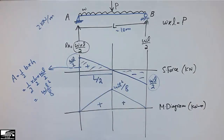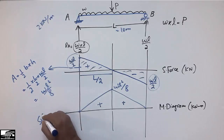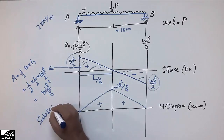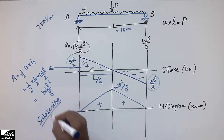The maximum moment always occurs at the midpoint of a simply supported beam with a uniformly distributed load. Hope you guys understand — don't forget to subscribe to the channel for more engineering videos. Thank you for watching.